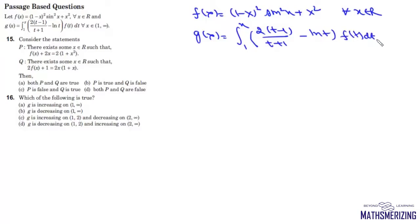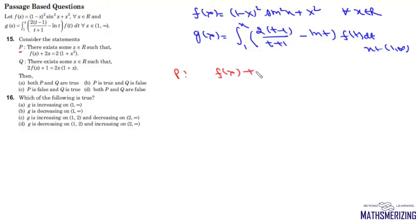Here x belongs to 1 to infinity. The first question asks us to consider two statements. Statement P: there exists some x in R such that f(x) plus 2x equals 2(1 plus x squared). Statement Q: there exists some x such that 2f(x) plus 1 equals 2x(1 plus x). We first look at statement P, which says f(x) plus 2x equals 2 plus 2x squared.